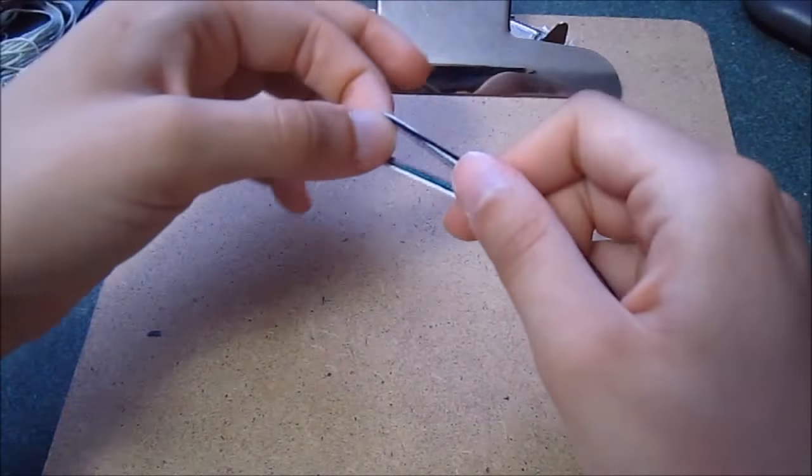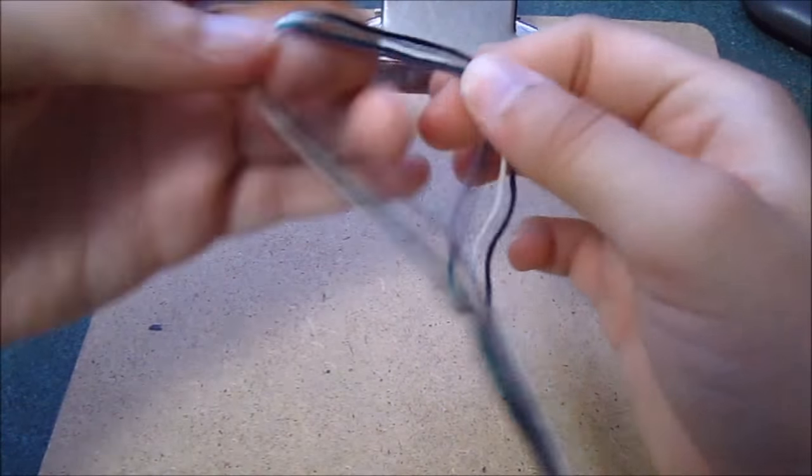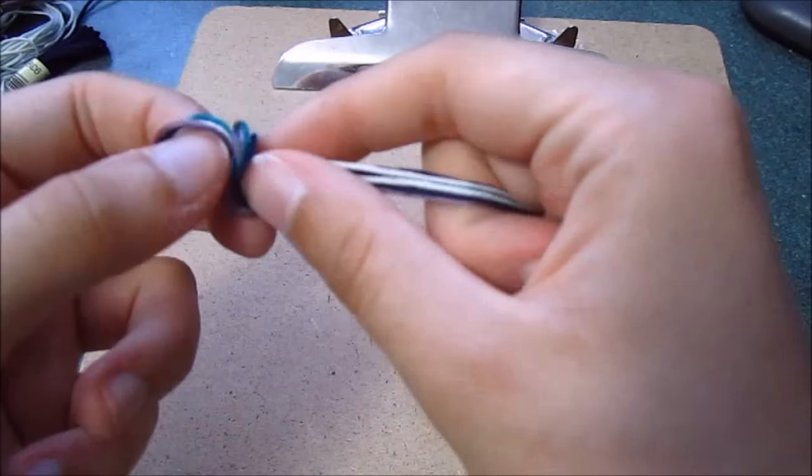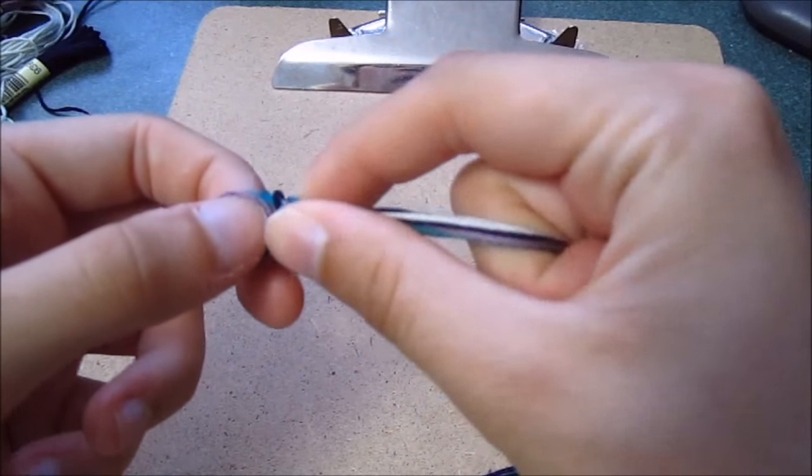Once your strings are cut, what you're going to do is fold the length of all four strings in half, match the ends, and then tie an overhand knot to form a loop.